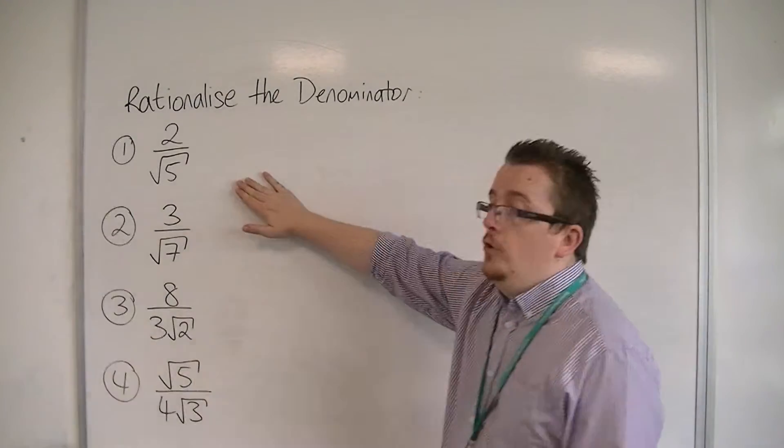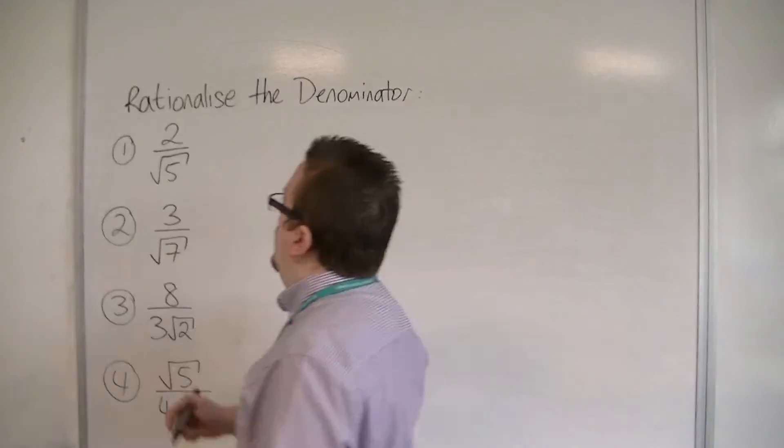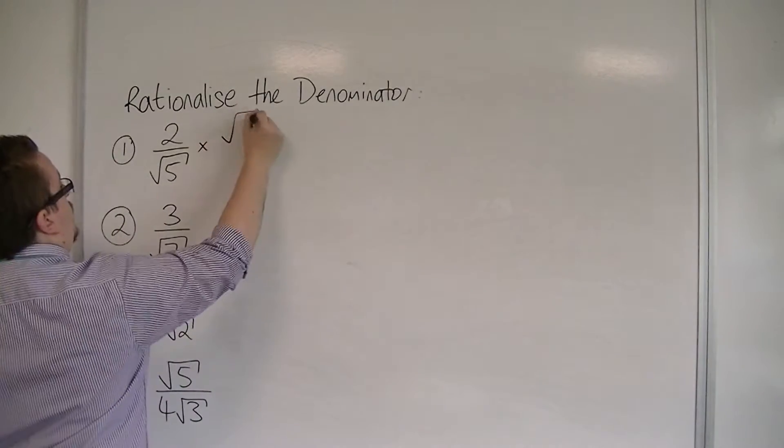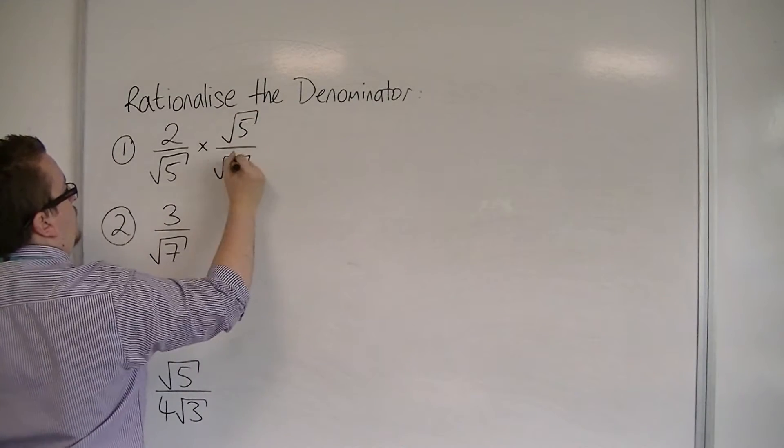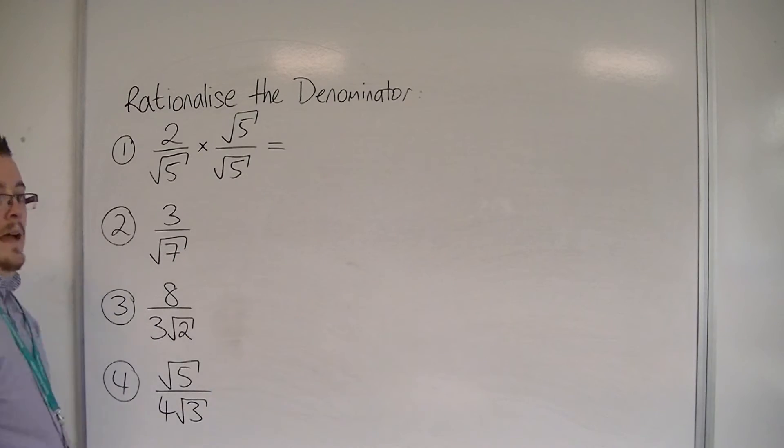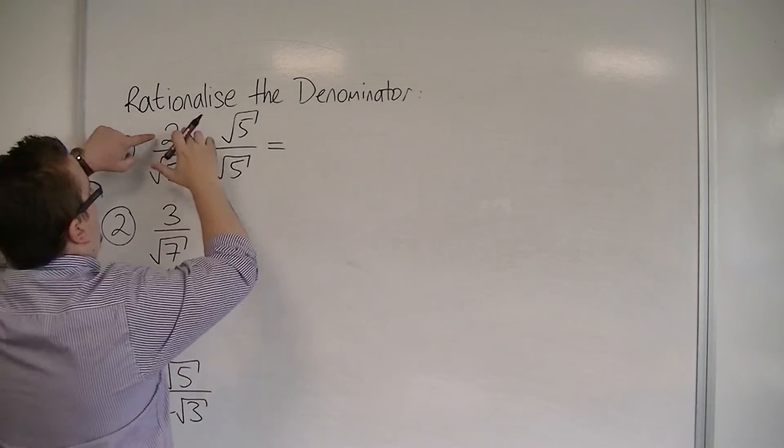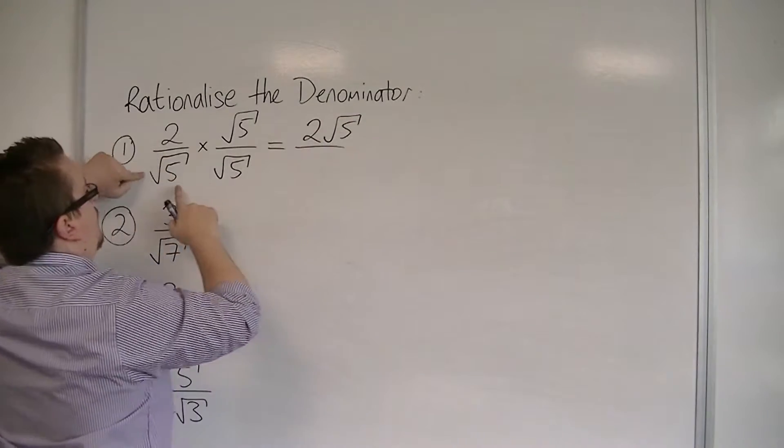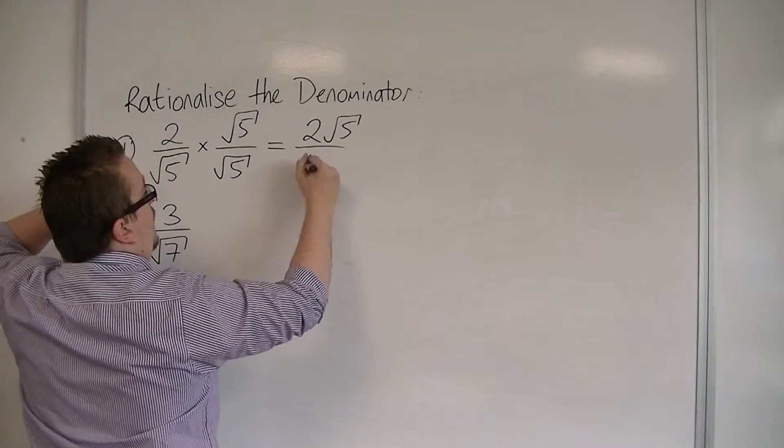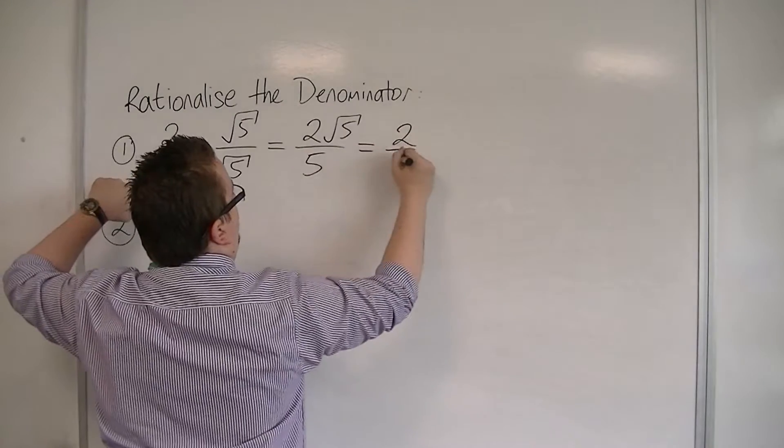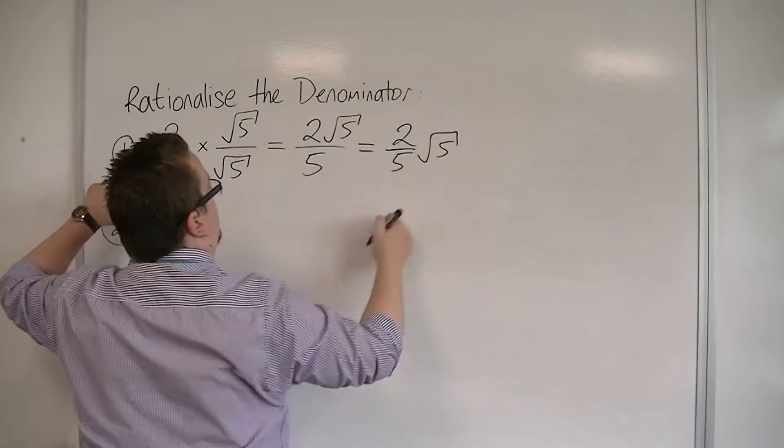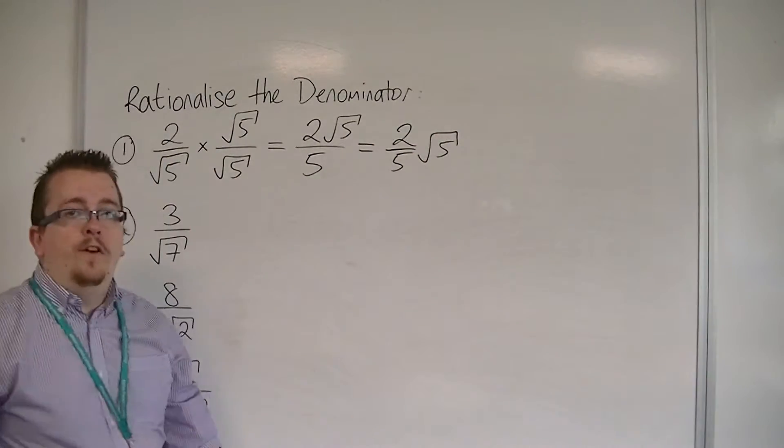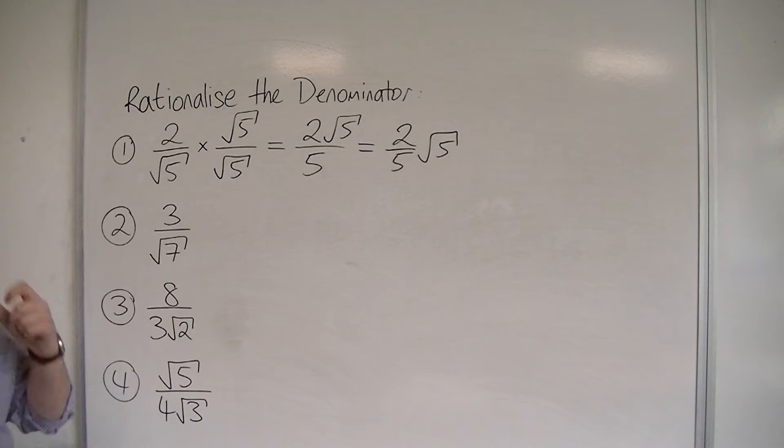For this first one, 2 over root 5, I would multiply this by root 5 over root 5. What's going to happen is I'm going to get 2 root 5 over root 5 times root 5, which is just 5. I can write that as 2 fifths root 5. You can leave this in either version. Both are exactly the same and perfectly interchangeable.